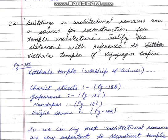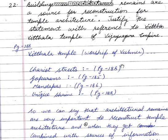Question number 22: 'Buildings or architectural remains are a source of reconstruction for temple architecture.' This means the buildings and architectural remains that survive help us understand what temple architecture was like, for example in the Vijayanagar Empire.